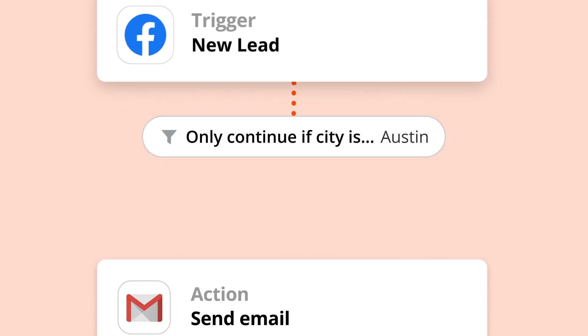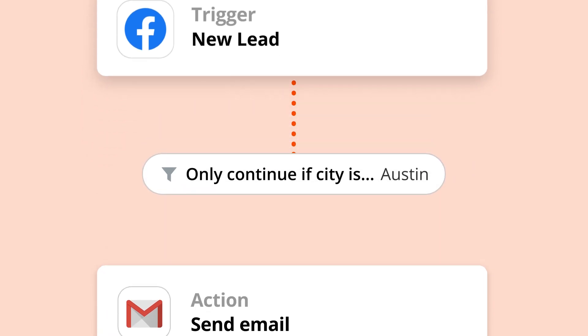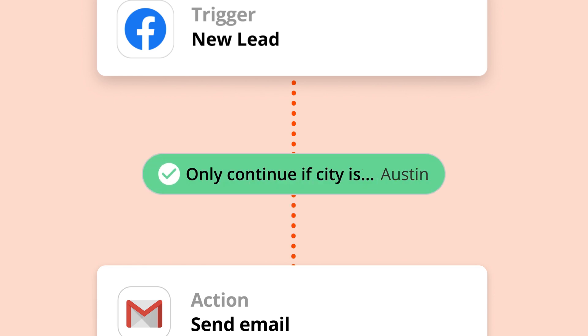But when you insert a filter step, you're adding an extra condition. Your zap will only continue running if your data matches certain criteria. Think of filters like traffic lights. You wouldn't want traffic in the street running all the time, so stop signs and red lights exist to control the flow of traffic. Filters also control the flow of traffic — they give the green light to data that meets certain rules and put up the red light for everything else.